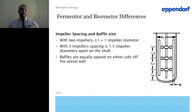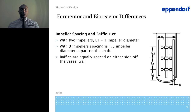Looking at impeller spacing and baffle sizing for fermenters: with two impellers, L1 is equal to one impeller diameter — so your impeller is located about one diameter-length up from the bottom. With three impellers, the spacing is 1.5 impeller diameters apart from each other along the shaft. Baffles are equally spaced on either side of the vessel wall.